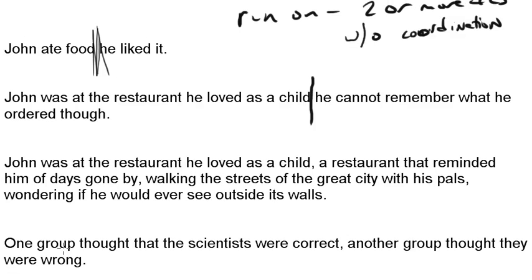Let's look at this sentence: 'John was at the restaurant he loved as a child. A restaurant that reminded him of days gone by, walking the streets of the great city with his pals, wondering if he would ever see outside his walls.' Now, just because the sentence is long doesn't mean that it's a run-on, and this is an example of that. This sentence is actually okay. You only have one independent clause here, which is 'John was at the restaurant he loved as a child.' The rest are either phrases or clauses.